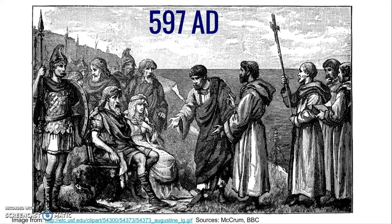In 597 AD, Augustine and about 50 monks from Rome brought Christianity to England. Along with Christianity, they also brought Latin. Sent to convert Britain by Pope Gregory, Augustine and his followers were received well. Before they came, artisans and traders from Rome had also spread the religion. As a result of these two forces, the conversion of Britain was slow but peaceful.